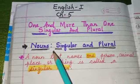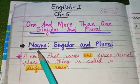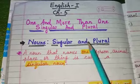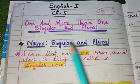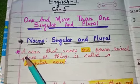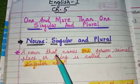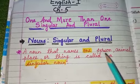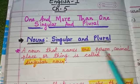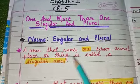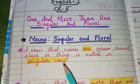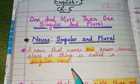Let's see the first point: nouns, singular and plural. A noun that names one person, animal, place or thing is called a singular noun.